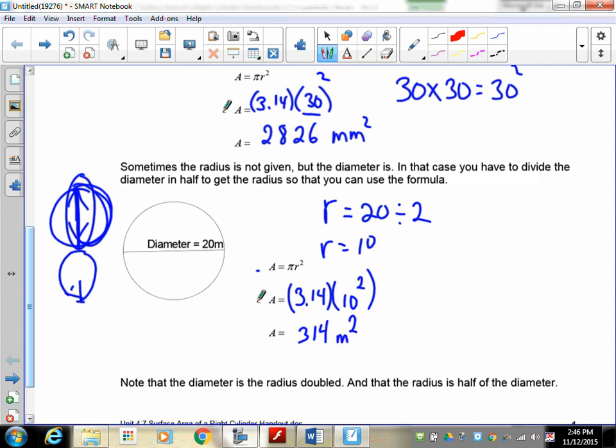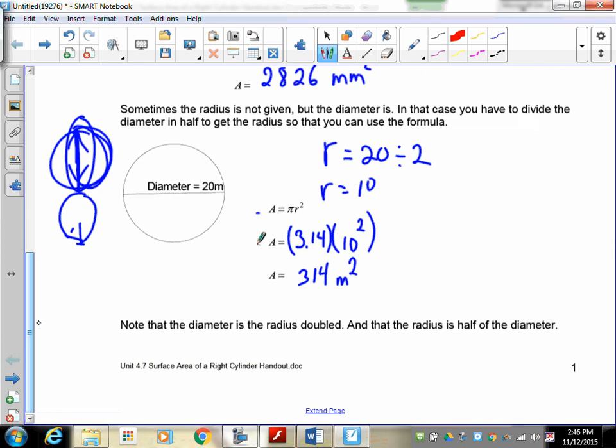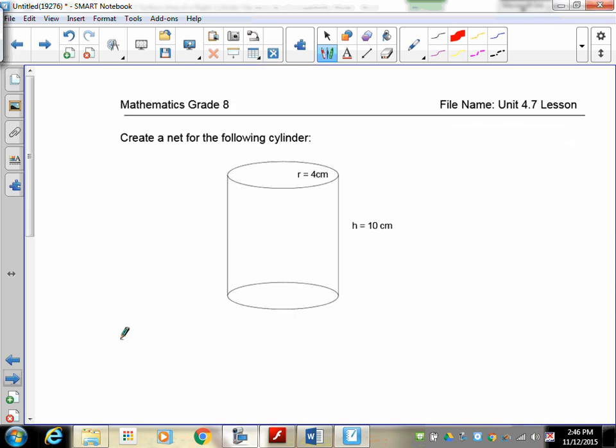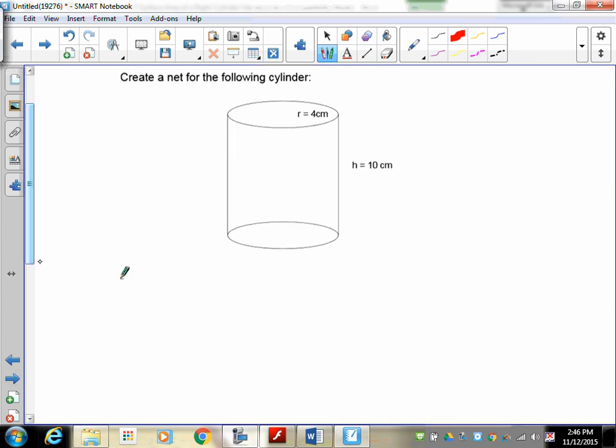We're working in meters, so it's meters squared. So, there's the review of the actual calculations of the surface area. Note that when the radius is doubled, you get the diameter. And when the diameter is cut in half, you actually get the radius.